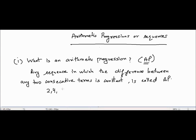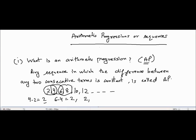Let's take an example. Consider the sequence 2, 4, 6, 8, 10, 12, and so on. The difference between 4 and 2 is 2. The difference between 6 and 4 is also 2. The difference between consecutive terms continues to be 2 — for example, 10 minus 8 equals 2. Because the difference is constant throughout, this sequence is an AP.